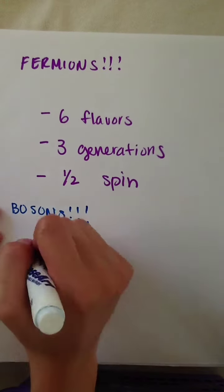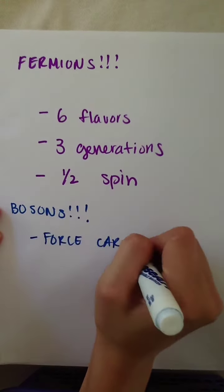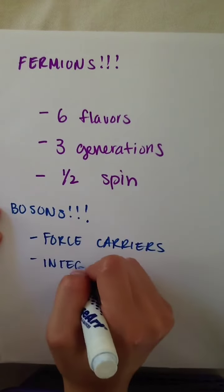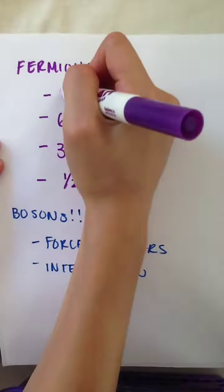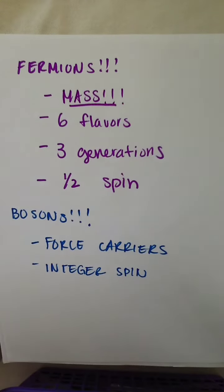Bosons, on the other hand, are particles with integer spins. There are six elementary bosons in the standard model, and they all carry forces, with the exception of the Higgs boson, as the Higgs field is not a force. An important difference between fermions and bosons is that all fermions have mass, unlike some bosons.